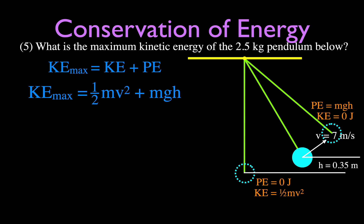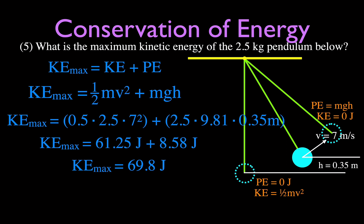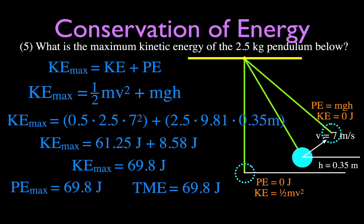Total mechanical energy equals one-half mv squared plus mgh. Plugging in: one-half times 2.5 times 7 squared plus 2.5 times 9.81 times 0.35 meters, giving 61.25 plus 8.58 joules. The maximum kinetic energy is therefore 69.8 joules. This is also the maximum potential energy at the top and the total mechanical energy at any point along the swing.